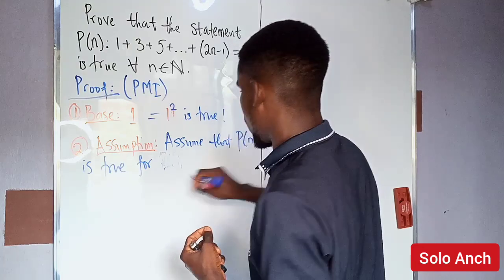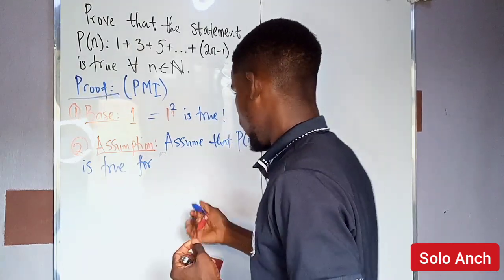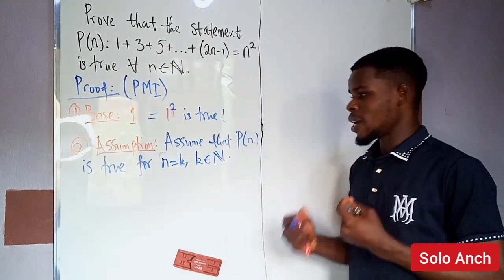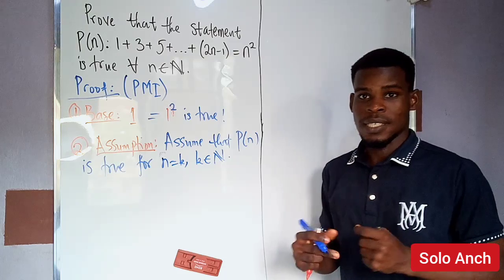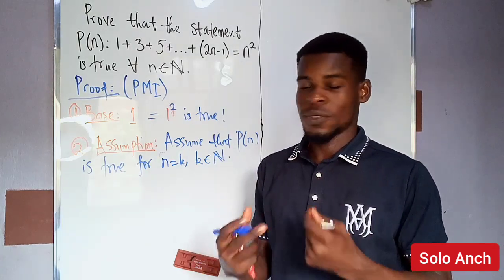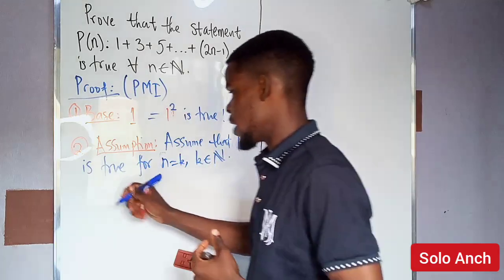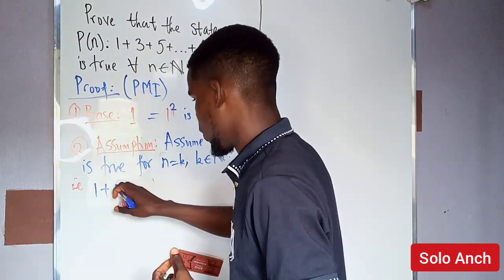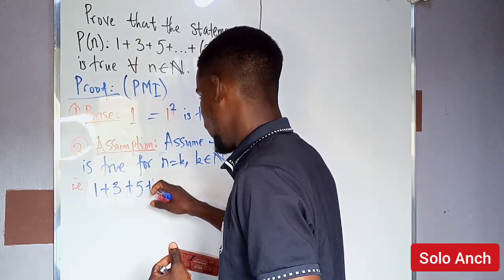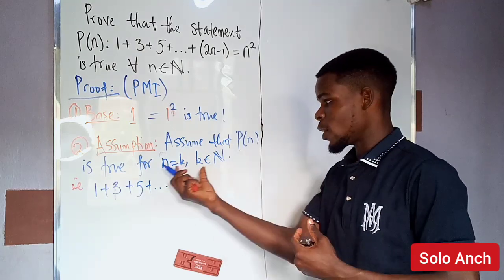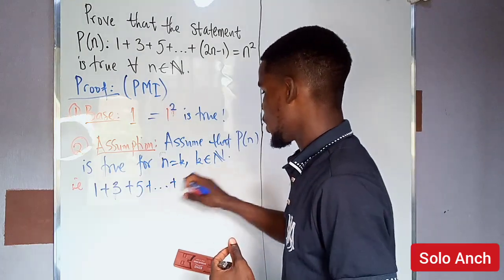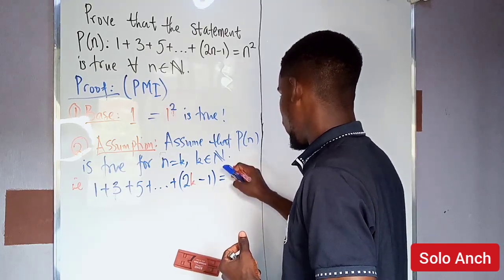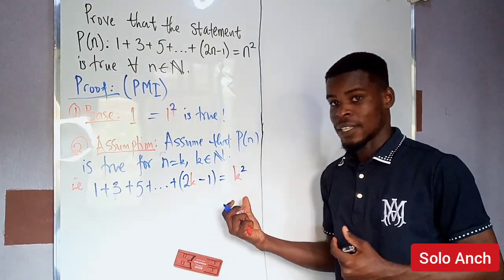We assume P(n) is true for n equal to k, where k is some arbitrary natural number. This means that when adding k odd natural numbers — one, three, five, and so on up to 2k minus one — the result is k squared. We call this equation one.